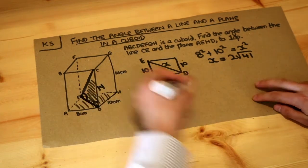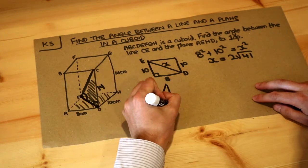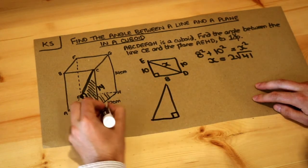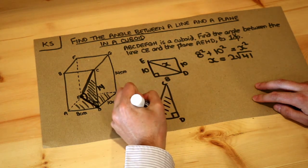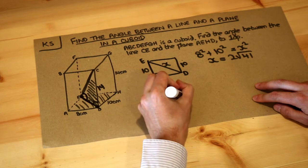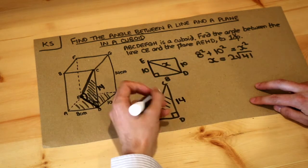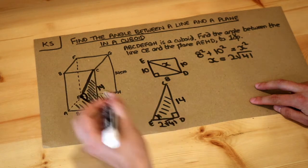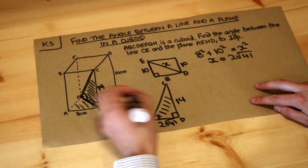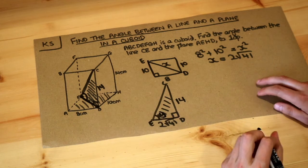And then let's think about this triangle here. I'm going to draw it out separately just to make it clearer. You've got EDC. Now we've got the 14 here, we've got this bottom length which we worked out was 2 root 41, and we're trying to find this angle here. I'm just going to call the angle Y.